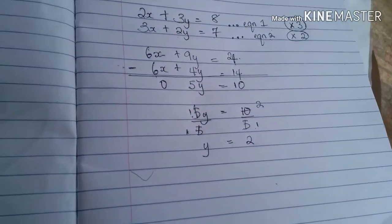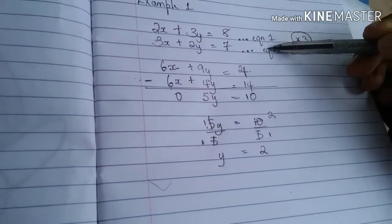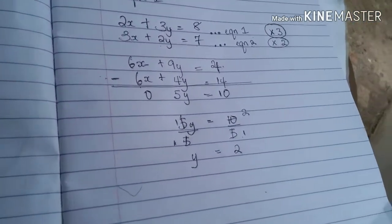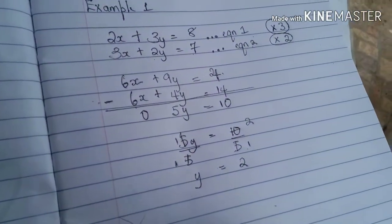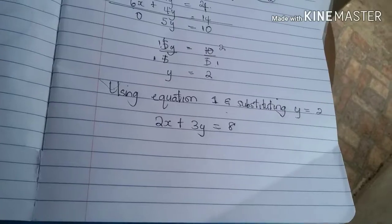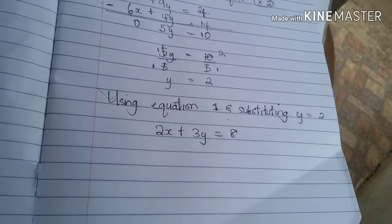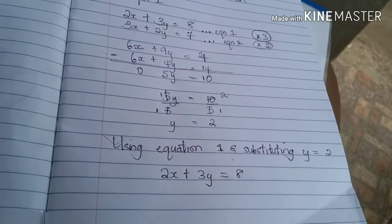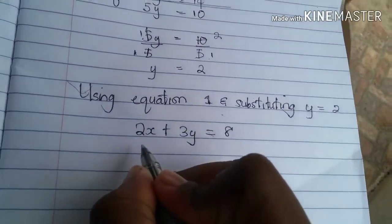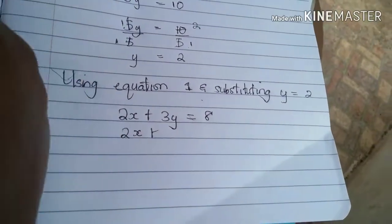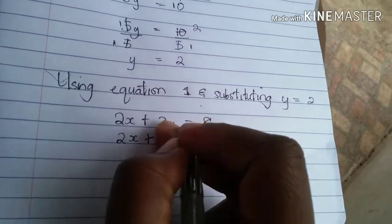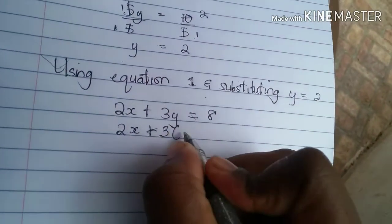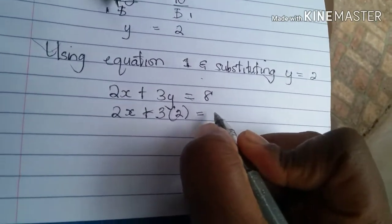Our next step is to use any one of our equations and substitute the value 2 wherever we see y in the equation. So I'm going to be using equation 1. Alright, so what we are doing now is substituting wherever we see y with the value 2. And we are using our first equation: 2x plus 3y is equal to 8. So we write back our 2x plus 3, but there is a y. So wherever we see y, we are going to replace it with the value 2. So let me just bracket it. Is equal to 8.